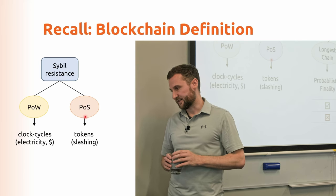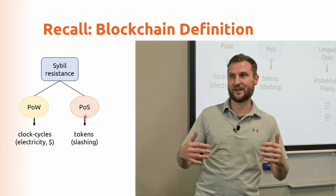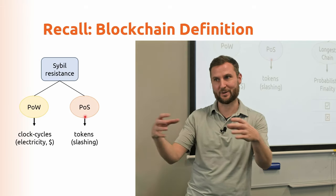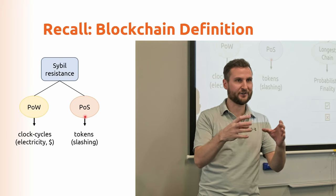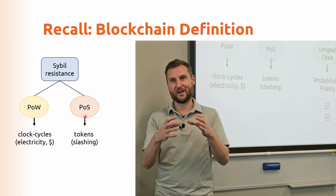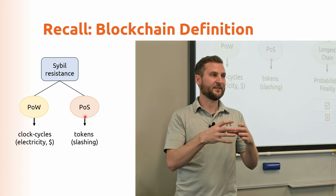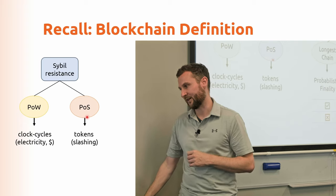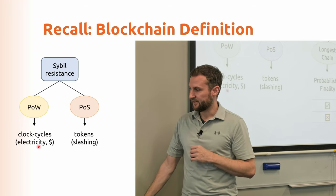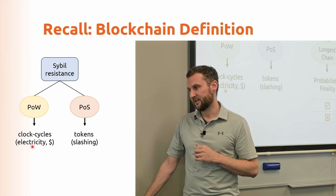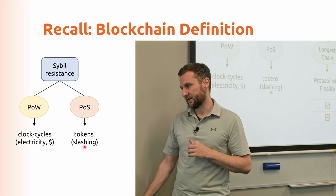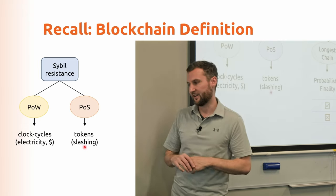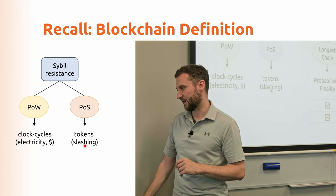In the proof of stake system, to prevent Sybil attacks you require people to bond their stake — submit a certain amount of tokens that map to real-world value and lock them up. If you want to create a hundred million validators in Ethereum, each one needs 32 ETH, and there's no way to make it look like all of them have the minimum required stake. The penalty in proof of work is wasted electricity; in proof of stake it's called slashing, where you lose some or potentially all of your stake for not playing by the rules.